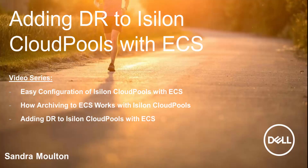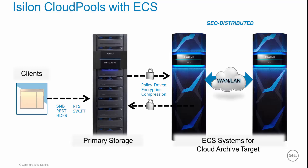Welcome to the video on how to add DR to Isilon Cloud Pools with ECS, part of the Cloud Pools to ECS video series. Cloud Pools is an Isilon feature that reduces Isilon storage costs by tiering infrequently accessed data to the cloud. In this video we will describe how Isilon Cloud Pools with ECS can be configured to protect the archived data against site-wide failures. We will start by explaining how Cloud Pools DR works and then configure it on a live system.